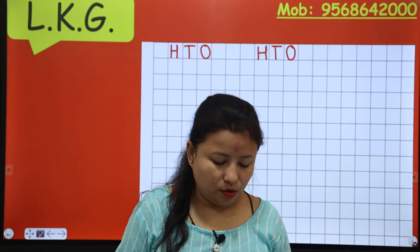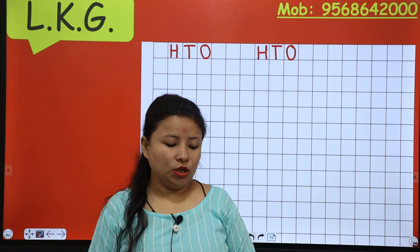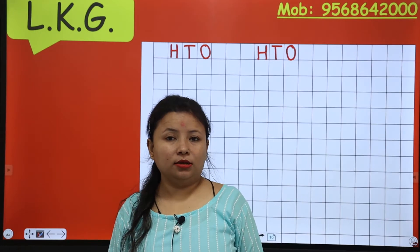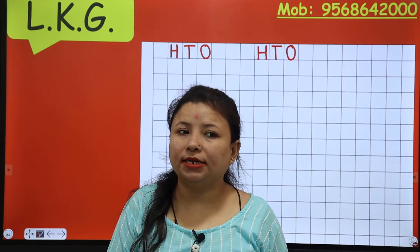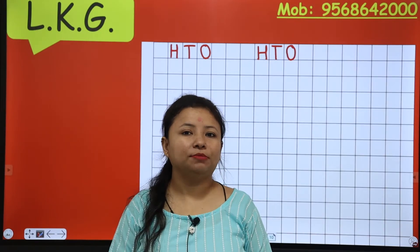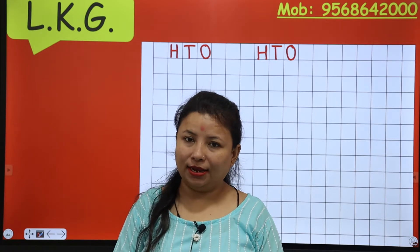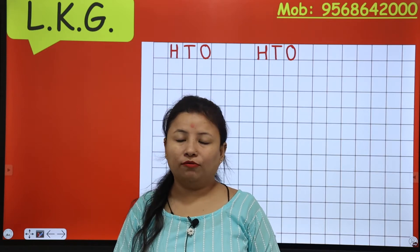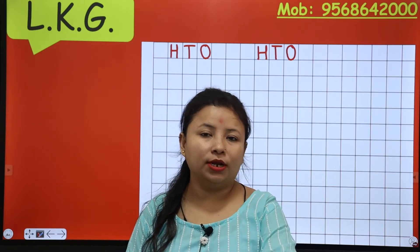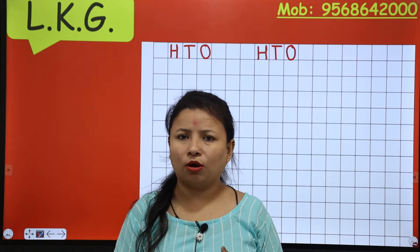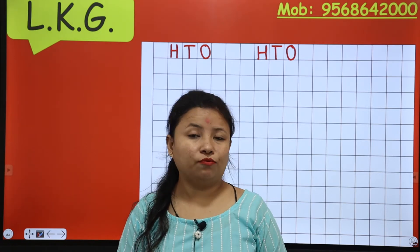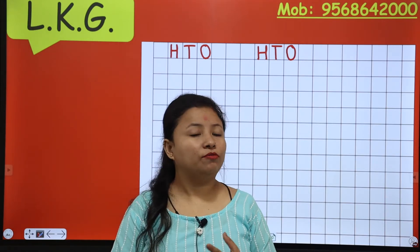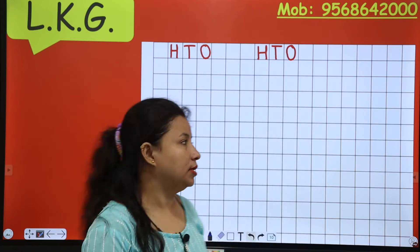So now my first number is 481, 481. 400 it means 4, 80 it means 8, and 1 — that is 481. So 481.